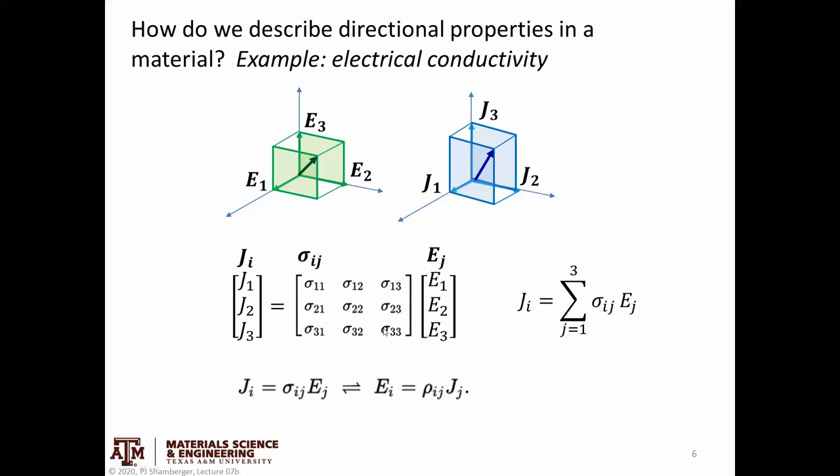Where we're going with this is that based on the symmetry of the material, these could be independent, or a lot of them could be dependent on each other and could reduce down to a much smaller number than nine. That's where we're going with Neumann's rule. We're trying to make our lives easier. We're trying to avoid many, many elements to describe a tensor.